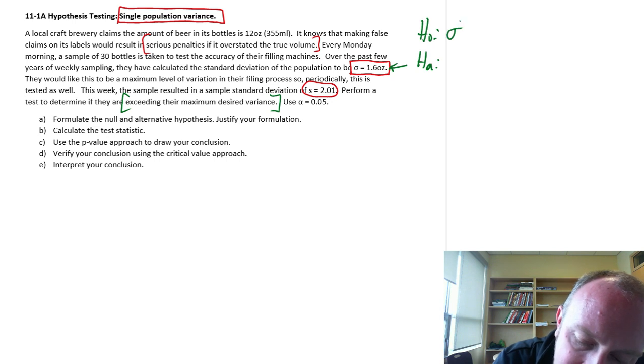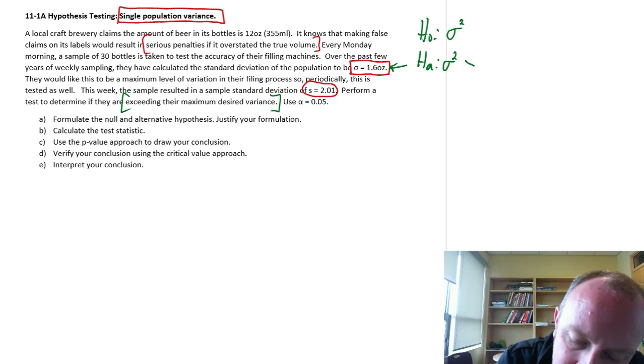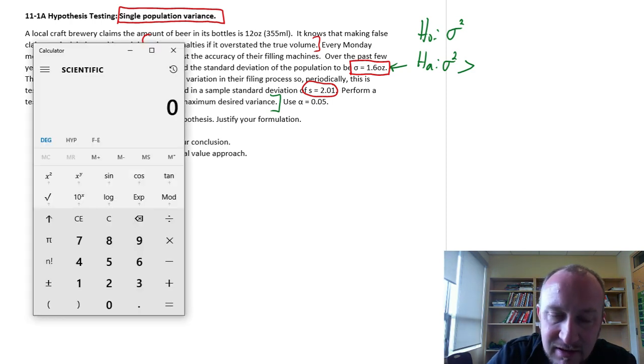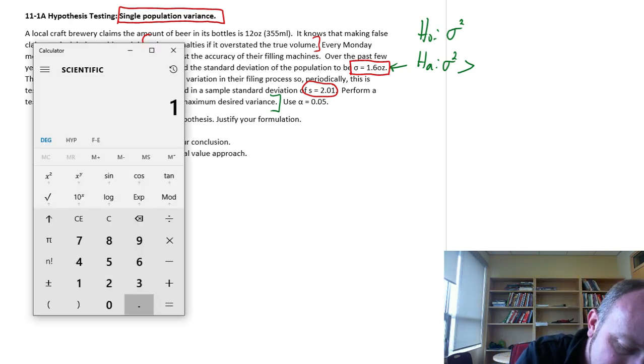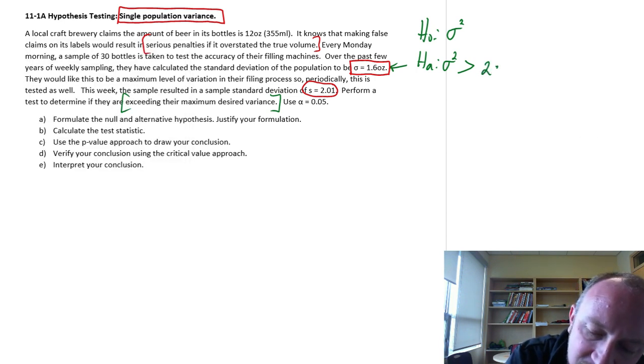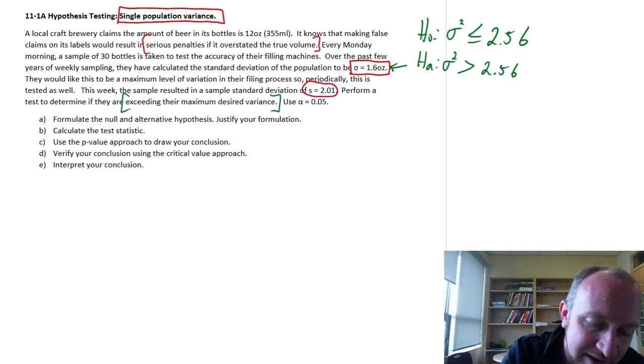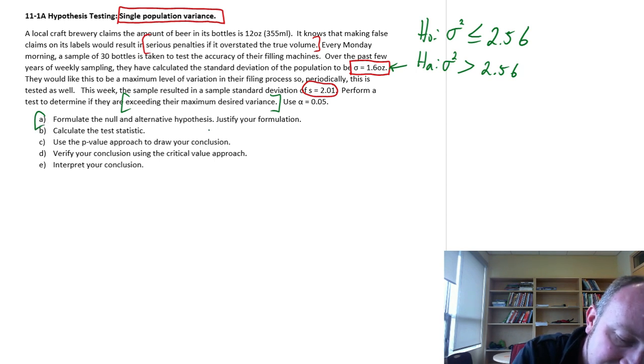And I want to test to determine if they are exceeding their target. So I'm going to put in not 1.6 as my standard deviation, I'm going to put 1.6 squared so 2.56 is my targeted variance. So do I have evidence to show that they are exceeding their maximum desired variance? So there's our null and alternative, there's my justification.